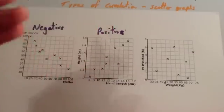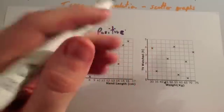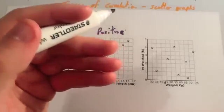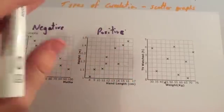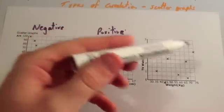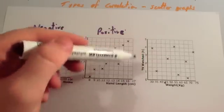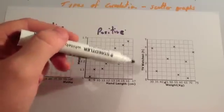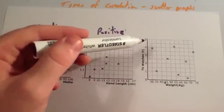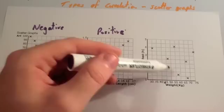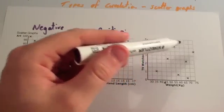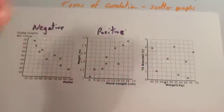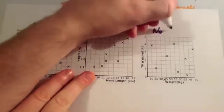Finally, the definition of no correlation is, there's no connection between the two variables. And the points will be randomly plotted around the scatter graph. You can see clearly that that's the scatter graph on the right. The weight of the people has got no connection to the amount of television watched. You can see the points are just plotted around on the scatter graph, and no line of best fit can be drawn. So this has got no correlation.